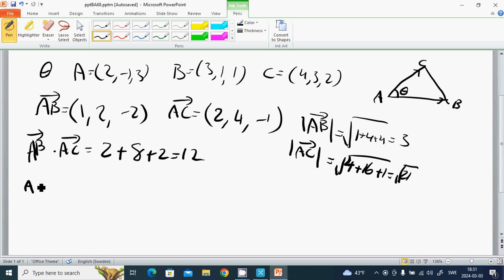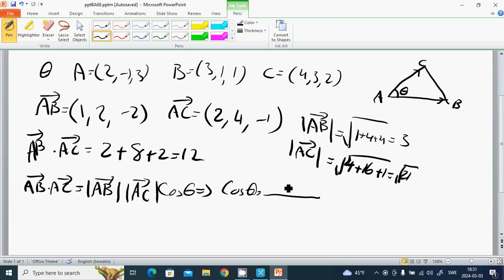Then AB·AC equals |AB|·|AC|·cos(θ), so 12 = 3√21·cos(θ). Thus cos(θ) = 12/(3√21) = 4/√21, and θ equals approximately 28.2 degrees.